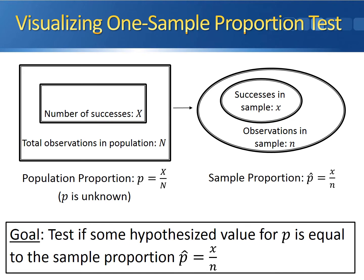Our ultimate goal is to test whether some hypothesized value for P, the population proportion, is equal to the sample proportion P-hat, or if there's some difference somewhere along the way.